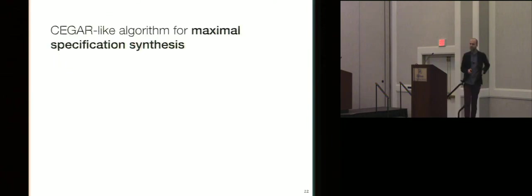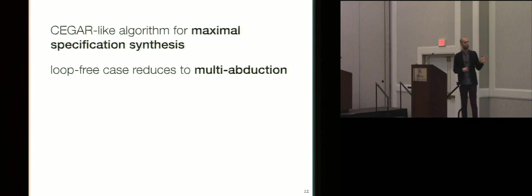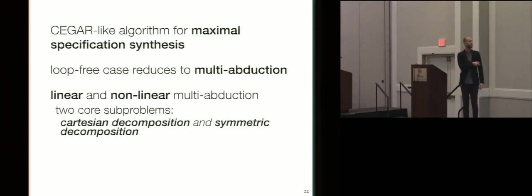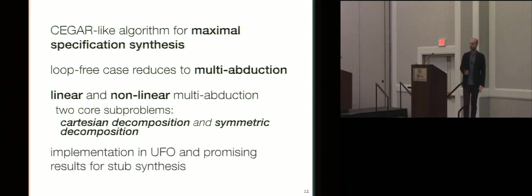So to summarize, really, the key ideas here are a CEGAR-like or a CEGIS-like algorithm for synthesizing the maximal possible specification. This turns out to reduce to a new problem that we define and we call multi-abduction. Multi-abduction is super cool. It has two forms, linear and non-linear. Linear, easy. Non-linear, hard. And the two ideas that we use to solve these are Cartesian decomposition and symmetric or isomorphic decomposition. And the implementation UFO gives us promising results. And at this point, I'll take questions. Thank you.